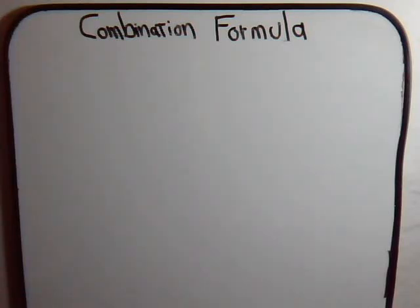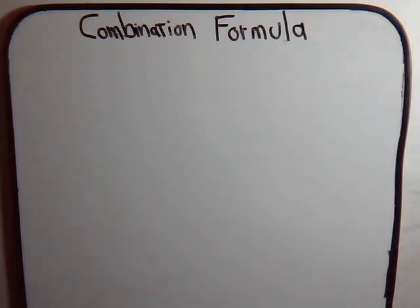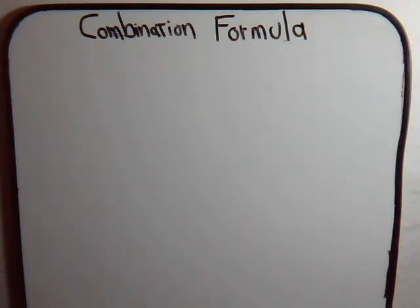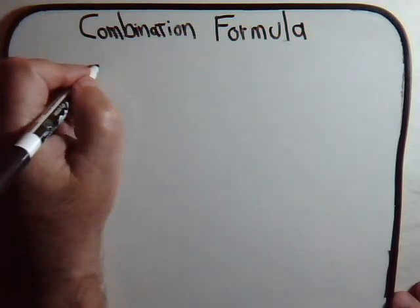In this video we want to talk about different ways of arranging a set of distinct objects. But when we consider our different arrangements, what will distinguish one arrangement from another won't be the order of the objects, but whether one group has at least one object that's different from what the other group contains. For example, suppose we have these letters.